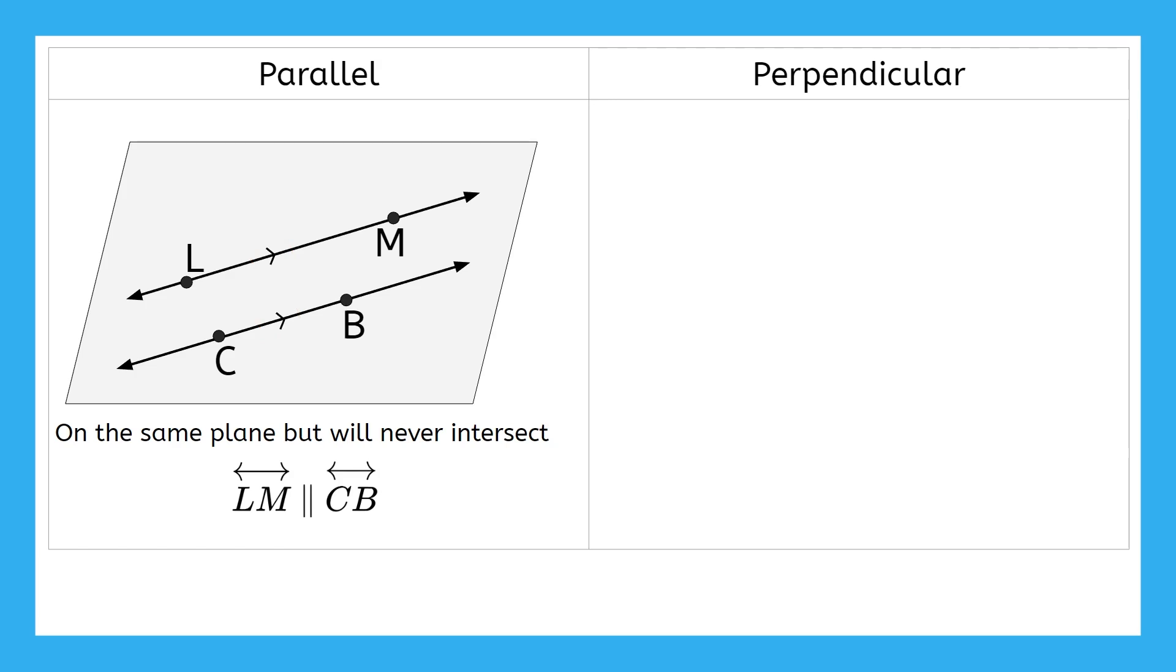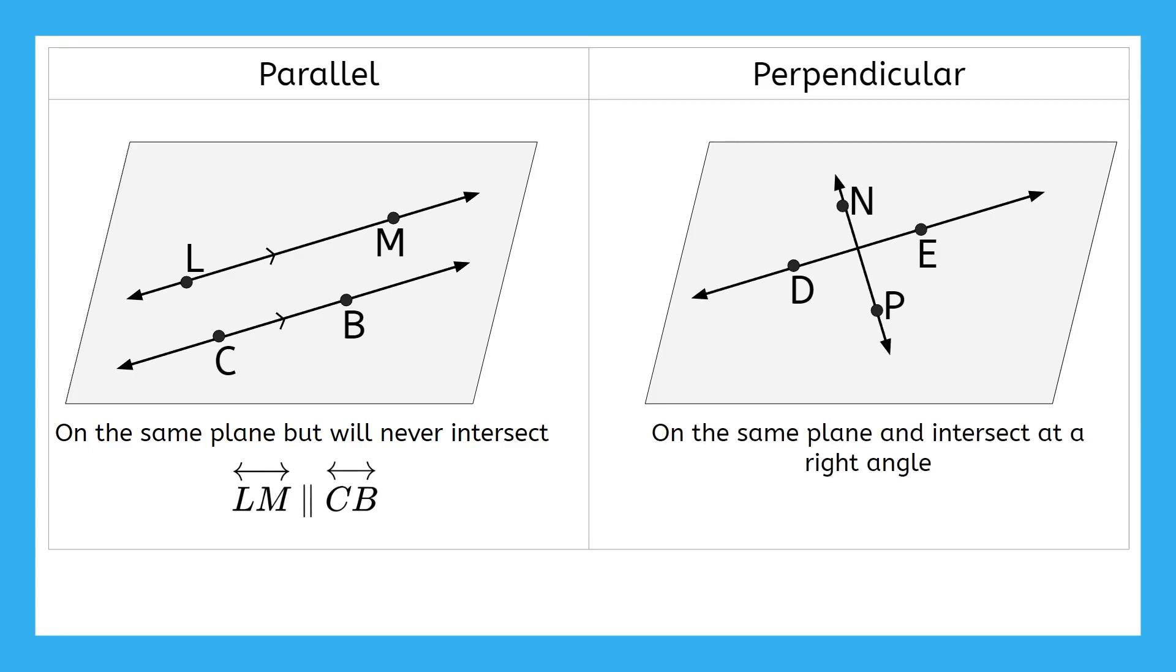Then, there's perpendicular. Perpendicular lines are also on the same plane as each other, but do intersect. And more specifically, they intersect at a right or 90 degree angle. In this example, lines NP and DE are perpendicular. This symbol is used for perpendicular when writing this out, and this symbol is used for perpendicular on a drawing. It looks like we're putting a little square in one of the right angles. And since there are four right angles here, you could put this symbol in any of them.